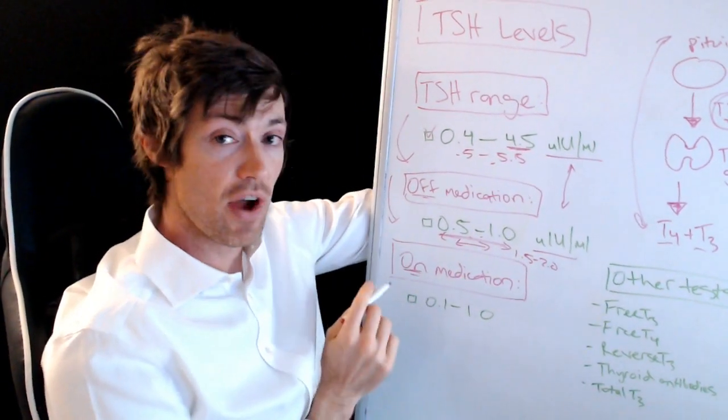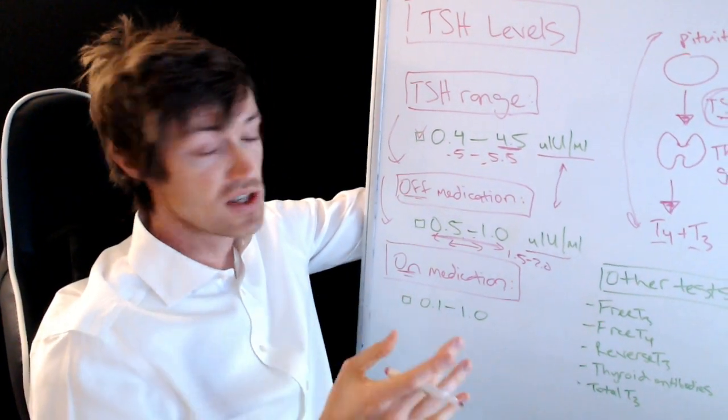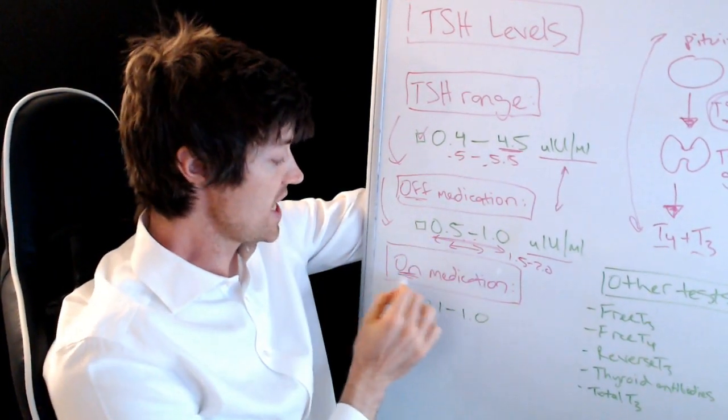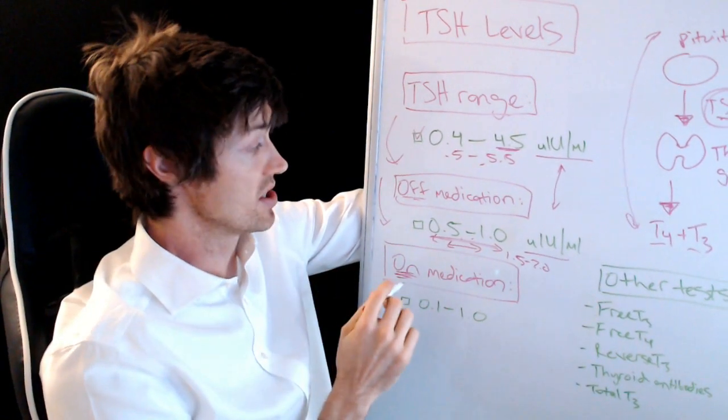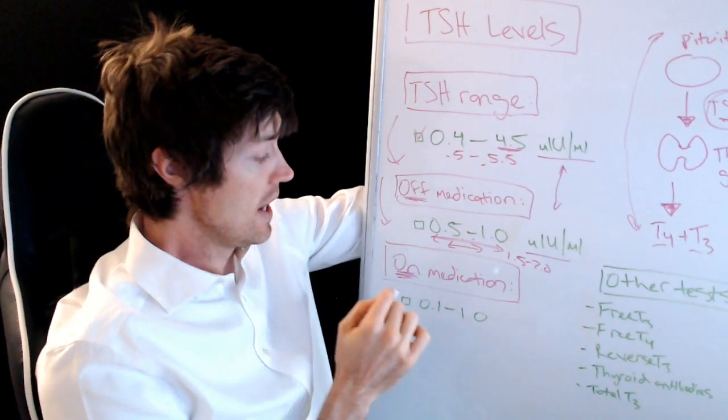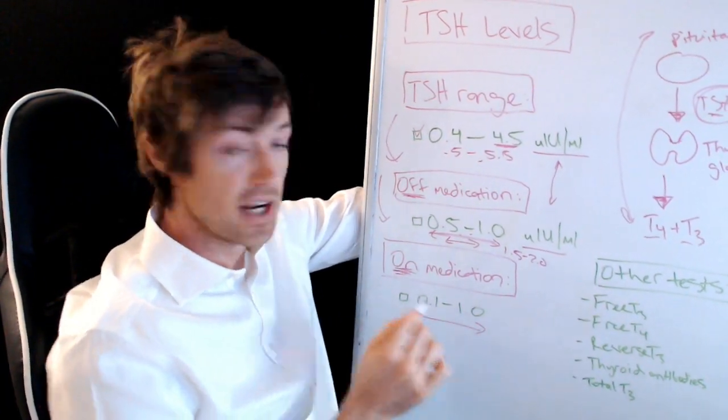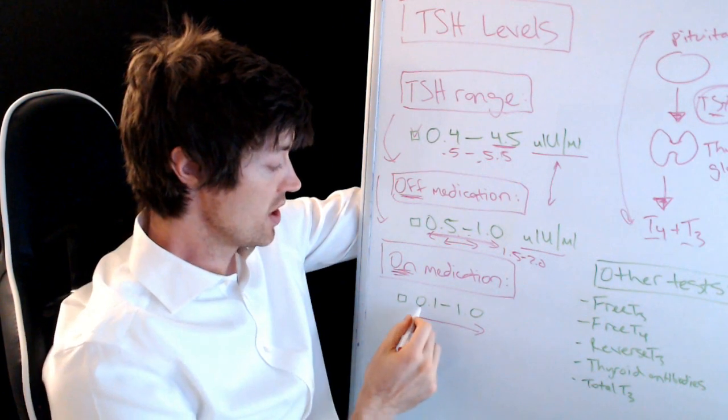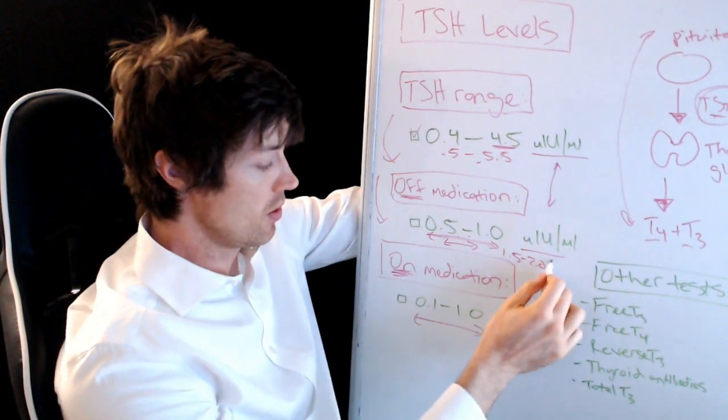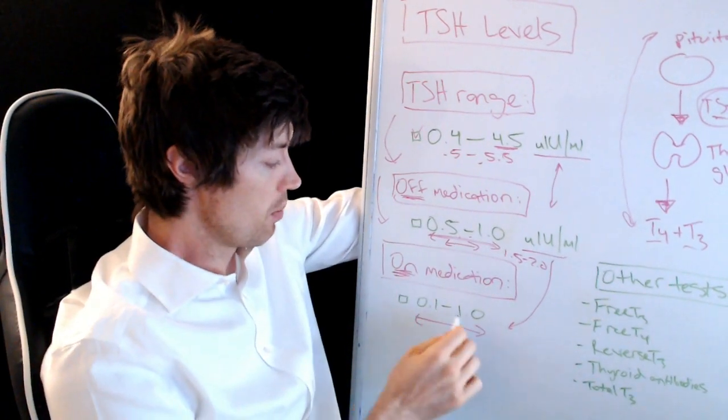Okay, so what about those who are on thyroid medication? This is where it gets a bit tricky, all right? And there's going to be a lot of you who are in this situation. I would say probably more of you are taking thyroid medication and wondering where your TSH should be as opposed to those who are off thyroid medication. All right, so here's where it gets a little tricky. I'm telling you the range here that is optimal for you is somewhere between 0.1 and 1.0 and you can bring down the same units here.